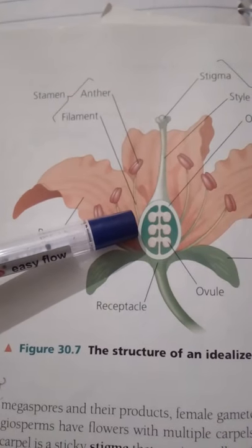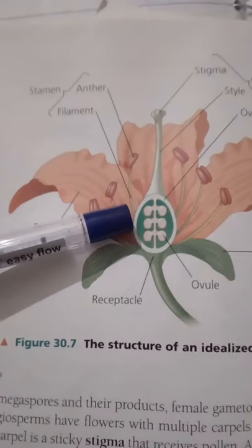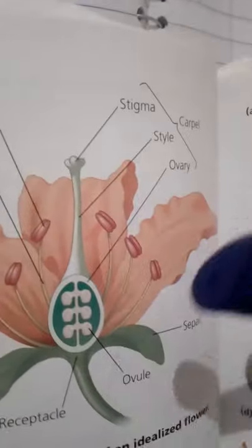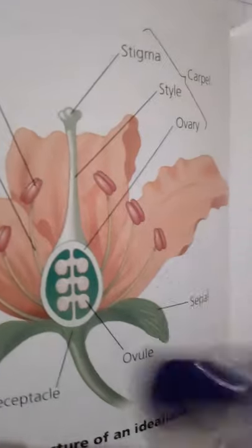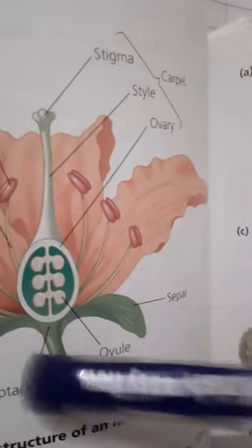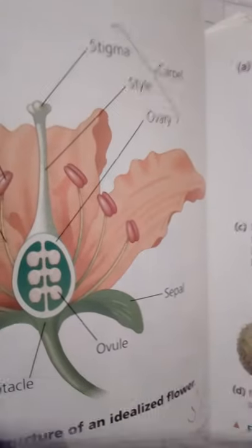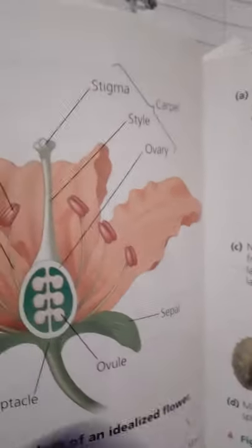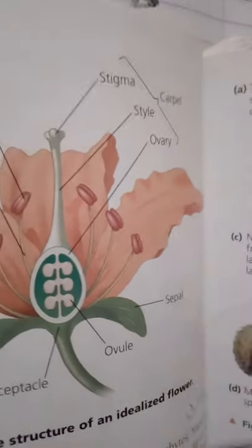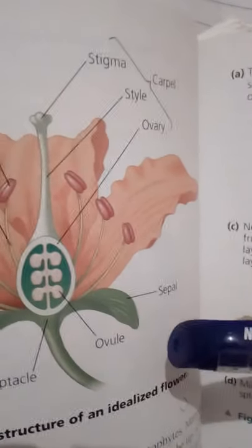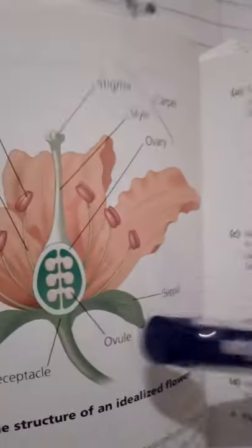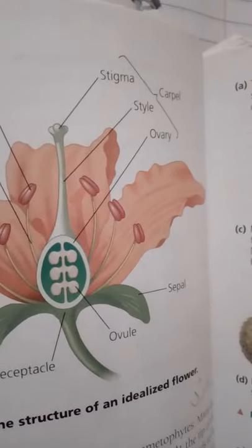A stamen consists of a stalk called the filament and a terminal sac called the anther, where pollen is produced. Carpels are the megasporophylls, which make megaspores and produce female gametophytes. Many angiosperms have flowers with multiple carpels. At the tip of the carpel is a sticky stigma that receives pollen. A style leads to the ovary at the base of the carpel, which contains one or more ovules. When fertilized, an ovule develops into a seed. The floral organs — sepals, petals, stamens, and carpels — are attached to a part of the stem called the receptacle.